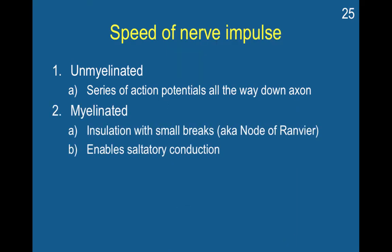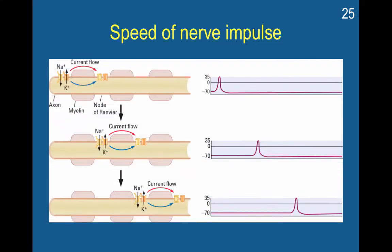In a myelinated axon, however, the axon is insulated and has small breaks between the insulation. These small breaks are called nodes of Ranvier, and this enables saltatory conduction. In a myelinated axon, you have a combination of the action potential wave traveling, along with saltatory conduction — which is like the rapid transmission of electrical activity through a conductor. The myelin acts like a conductor and transfers the positive charge from one part of the axon down to the next node of Ranvier.